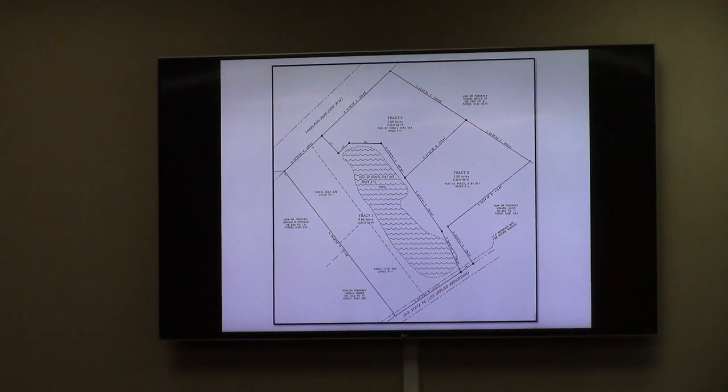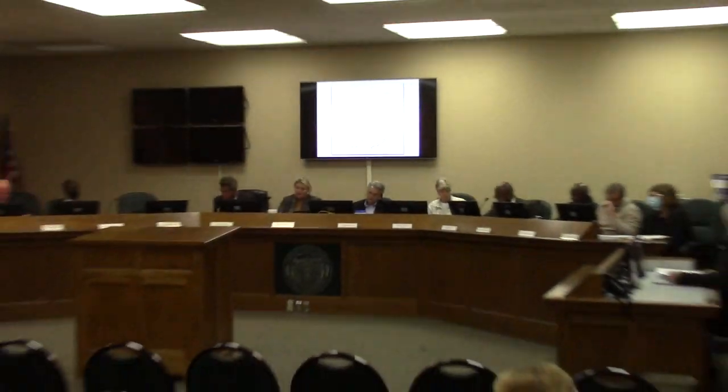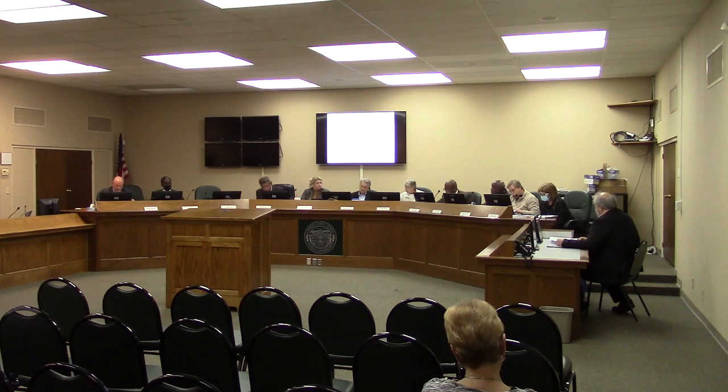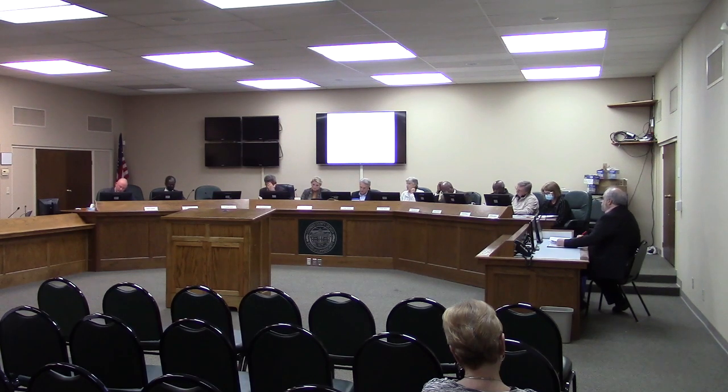If not, I'll turn it back over to the commissioners. Any discussion, questions? If not, I'll entertain a motion. Commissioner Wildes. Regarding the rezoning case REZ 22-05, the request is to rezone from EA to RA for the purpose of dividing the two lots into two 2.66 acre lots. As the staff discussed, this is consistent with the character area, and I would like to recommend that we recommend approval.